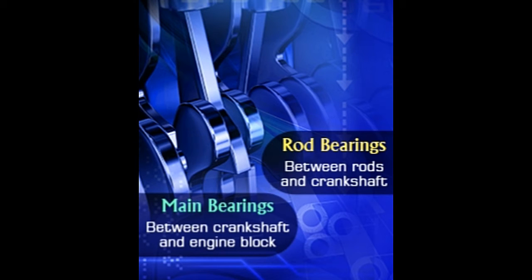The three main types of engine bearings are connecting rod or rod, crankshaft or main, and camshaft bearings. The definitions of rod and main bearings, along with the differences between them, are given in the following sections.